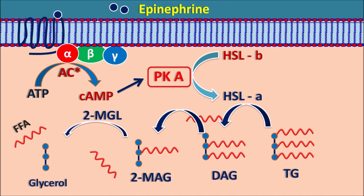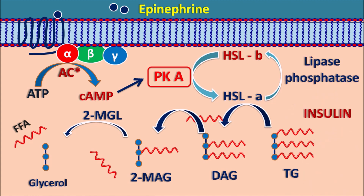But how does insulin act? Insulin acts quite opposite to epinephrine. The important enzyme here is lipase phosphatase, which reconverts hormone sensitive lipase A back into its inactive form. This lipase phosphatase enzyme is stimulated by insulin. Therefore, insulin produces inactivation of the hormone sensitive lipase A enzyme and thereby inhibits lipolysis.